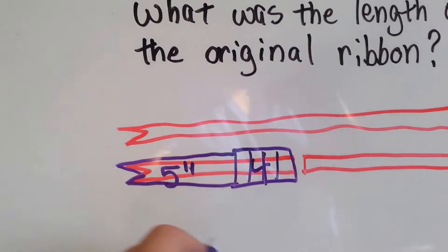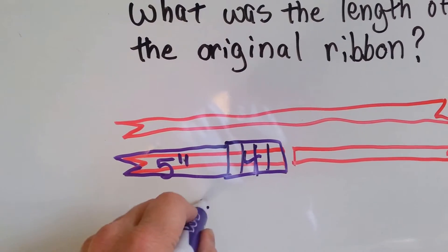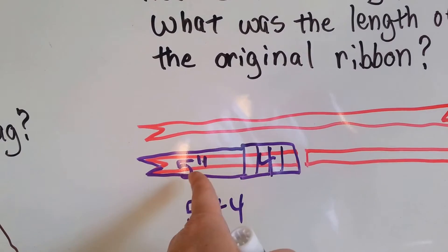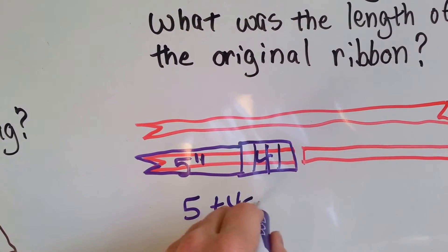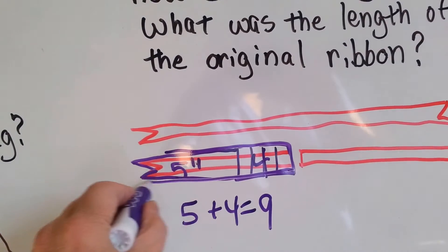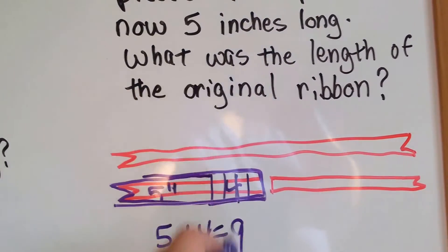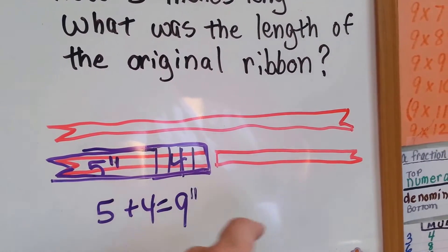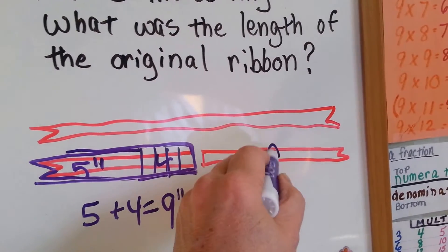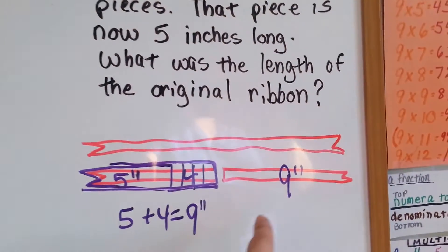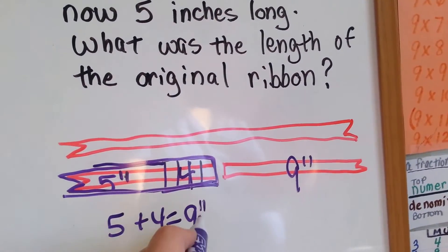So, the first thing we're going to do is we're going to say 5 plus 4 to put that one back together. 5 plus 4 equals 9. So, if this side is 9 and she cut it into equal pieces, how long do you think this side is? This side is 9 inches. This side is 9 inches because she cut it into equal pieces.